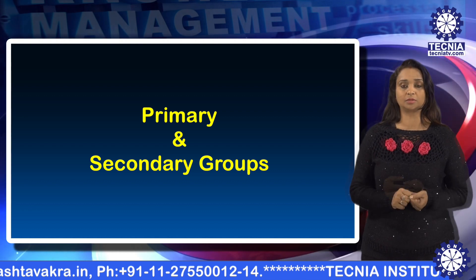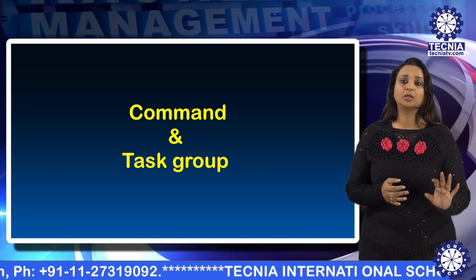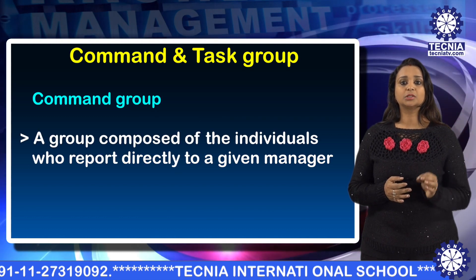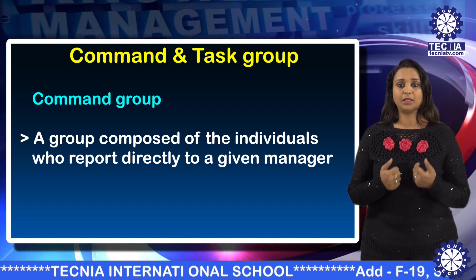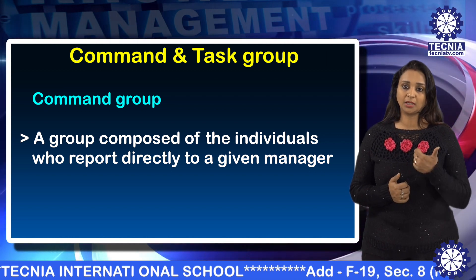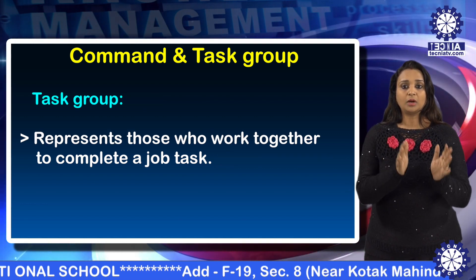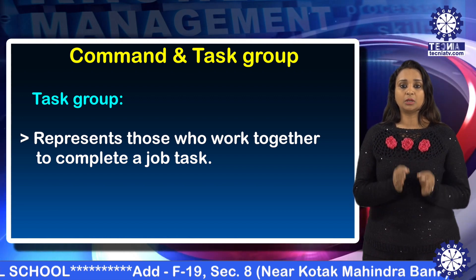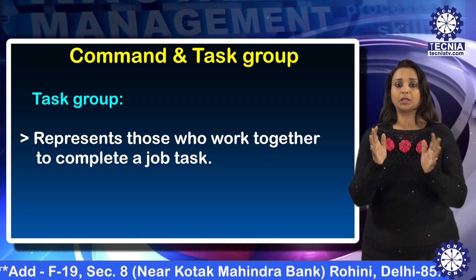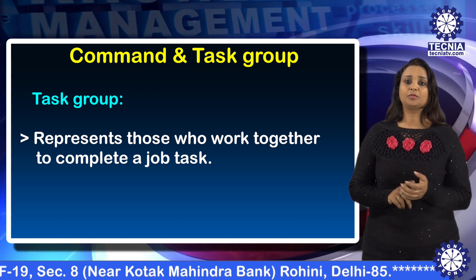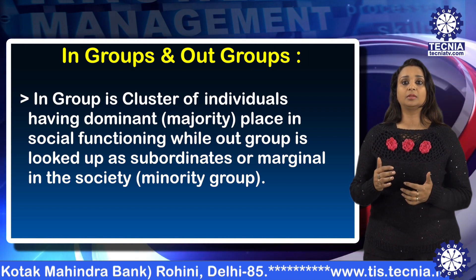Command and task groups are basically formal groups. In command groups, subordinates report directly to a common superior — for example, principal and teachers, or a manager and his subordinates. The task group is comprised of employees who work together to complete a particular task or project, or to solve a particular problem.